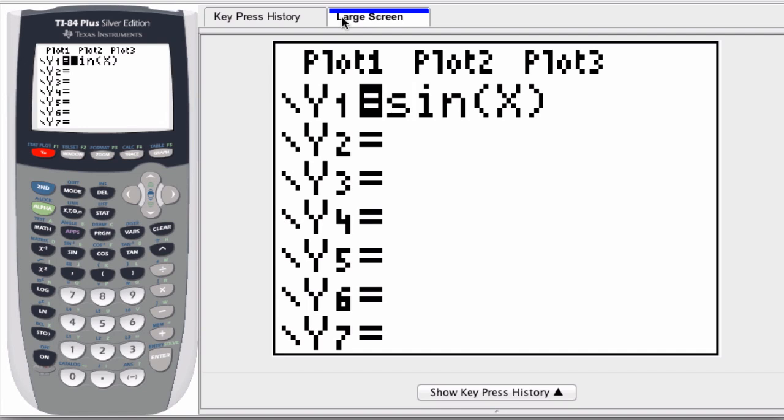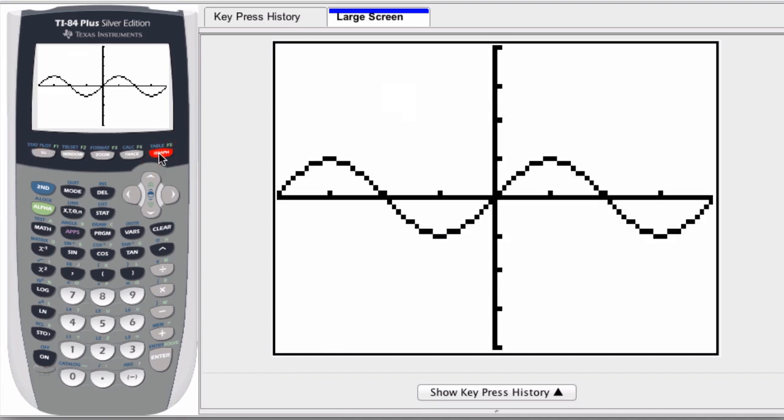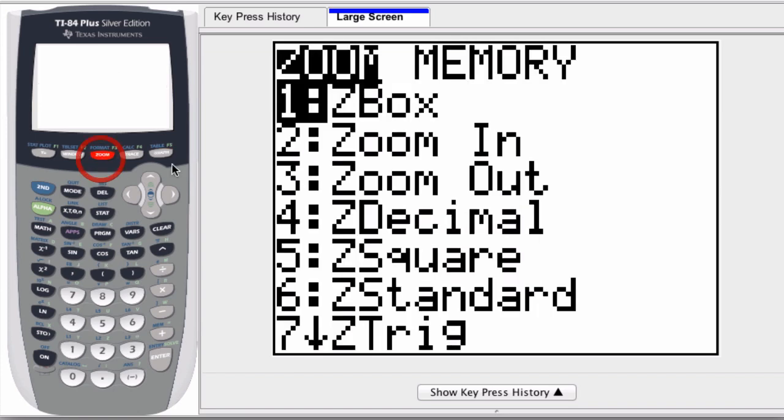If I want to draw the tangent line to a function, I first enter in that function, here my y equals button, and then I hit graph. With a trig function, you might have to go to zoom, and then number seven here, zoom trig.